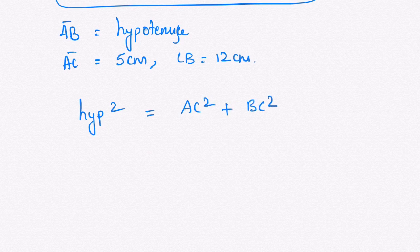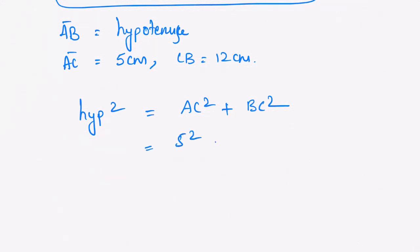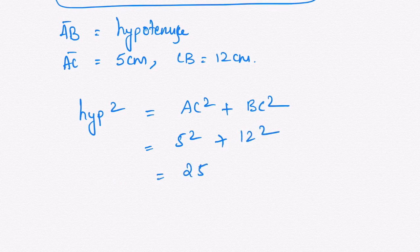So now AC square is 5 squared plus BC square is 12 squared. So 5 squared is 25 plus 12 squared is 144.